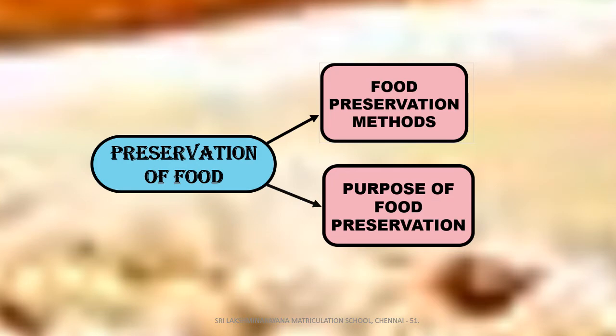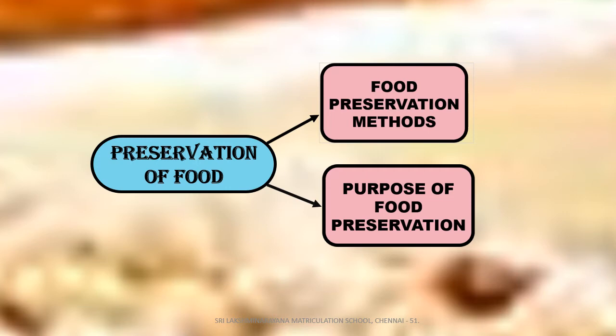Preservation of food: the process of keeping food materials for a long time is called food preservation. The food will get spoiled if it is not preserved. Let me discuss about the methods of food preservation and its purpose.